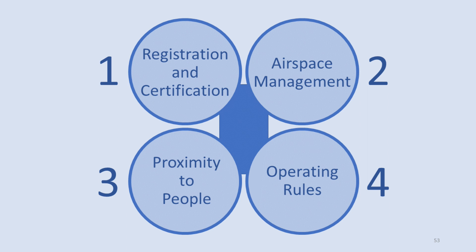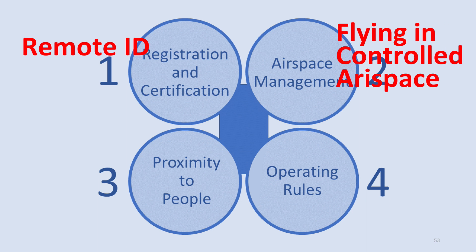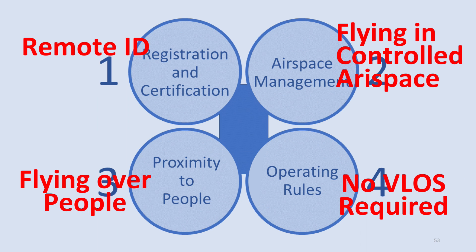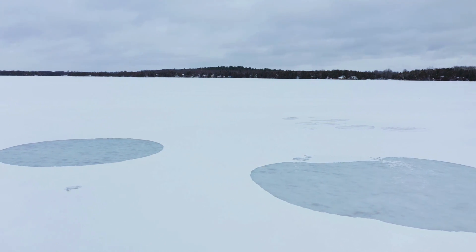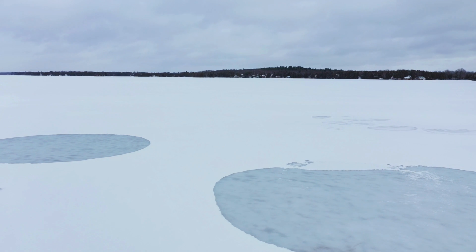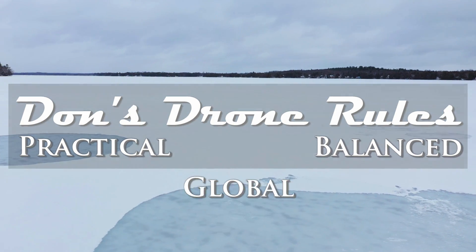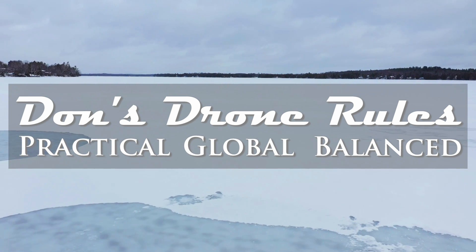Well, there you have it — the four modules of Don's Drone Rules. Thank you for taking the time to listen to me drone on through these proposed regulations. I'd really love to hear your thoughts, because some of these things are controversial: remote ID, allowing flights at low altitudes in controlled airspace, flying over people, and now trashing visual line of sight — yes, this is blasphemy. But I hope you can see where I'm coming from. I've laid out the principles and tried to come up with rules that meet those principles in a practical way, with a good balance between risk and restriction. Bring on the good, the bad, and the ugly — I welcome all comments, but please keep it constructive. Don's Drone Rules: my proposal for a comprehensive set of practical rules, globally applicable and sensibly balanced.